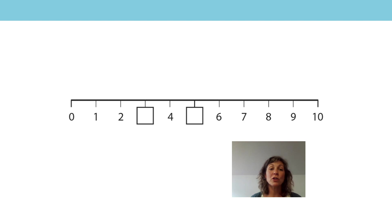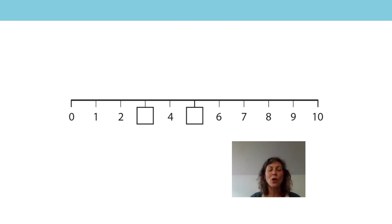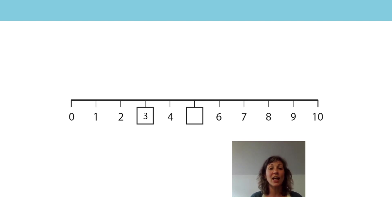In today's lesson, we're going to look at something slightly different. We're going to start by counting, but I've got a problem with my number line. Some of the numbers are missing, but I know you're really, really good at counting. Can you help me with the missing numbers? Let's start at the beginning. I've got 0, 1, 2 — what comes next? Did you say 3? That's right, because 3 is 1 more than 2, so I know that's the next number on my line.